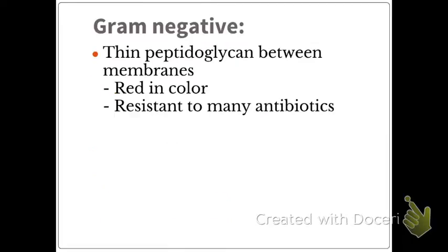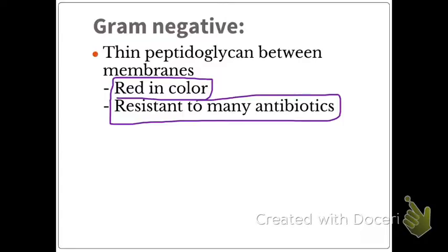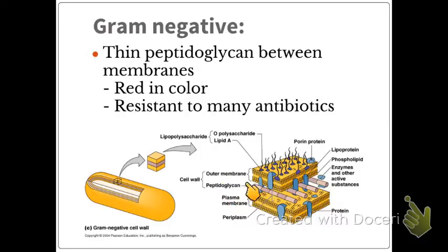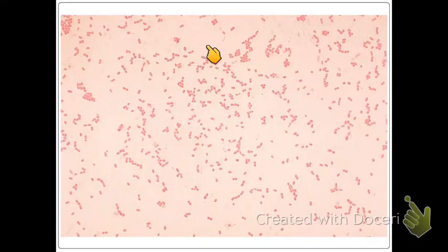Gram negative bacteria have a thin peptidoglycan layer between membranes, appear red in color, and are resistant to many antibiotics — which makes them very concerning. In the gram negative diagram, we have a bilayer with membranes, different saccharides, sugars, and peptides. The thin peptidoglycan layer in between is what makes it red when we stain it.